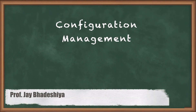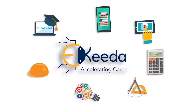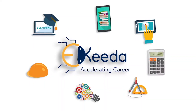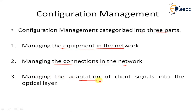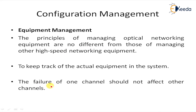Hello students. Here we are going to learn about configuration management. Configuration management can be categorized into three parts: first, managing the equipment in the network; second, managing the connections in the network; and third, managing the adoption of client signals into the optical layer. We start with the first: equipment management.